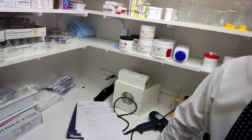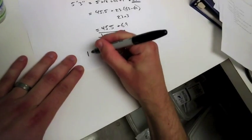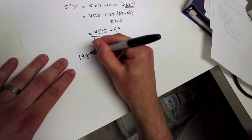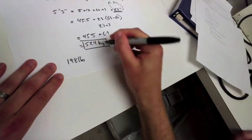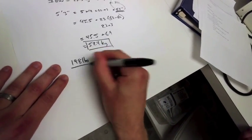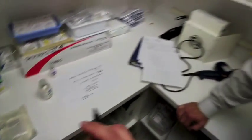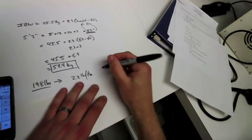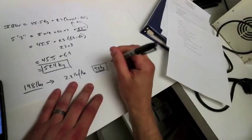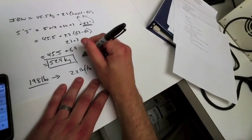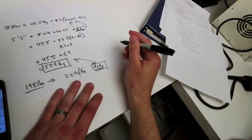What does this person weigh? 198 pounds. So I have to convert this to kilograms. 90 kilograms — this is more than 20% of the ideal body weight, so we need to use an adjusted body weight.